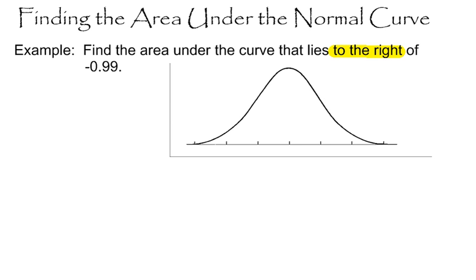Once again, drawing a picture is extremely important. I'm going to go ahead and label and recognize that right here in the center is a z-score of 0. The z-score is always 0 in the center of my normal distribution.